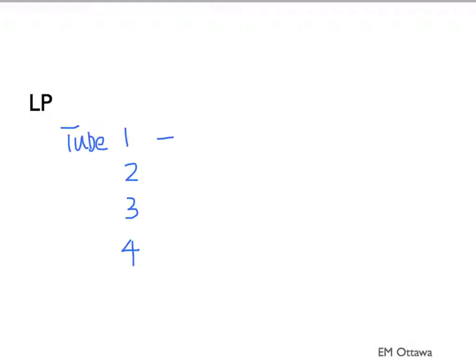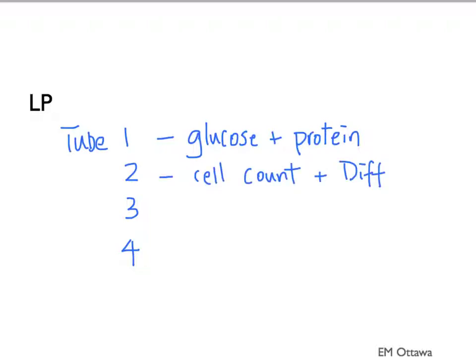The main diagnostic tool, however, is a lumbar puncture. A few tubes of CSF fluid should be obtained. One tube should be sent for glucose and protein. A tube is sent for a cell count and differential. A tube for gram stain and culture. And a fourth tube can be sent for viral PCR if we are suspicious of a viral cause.